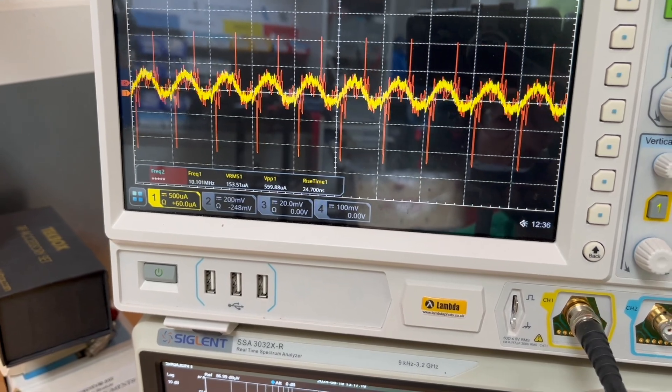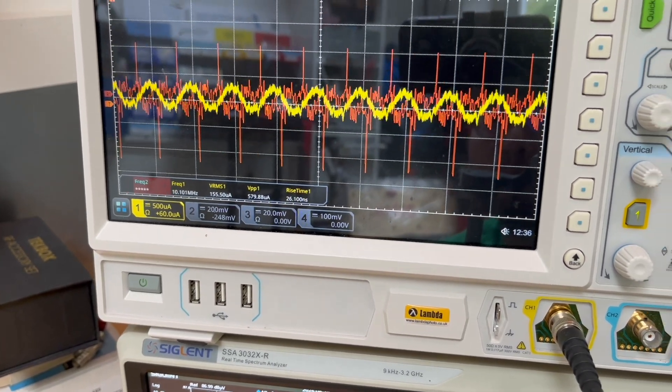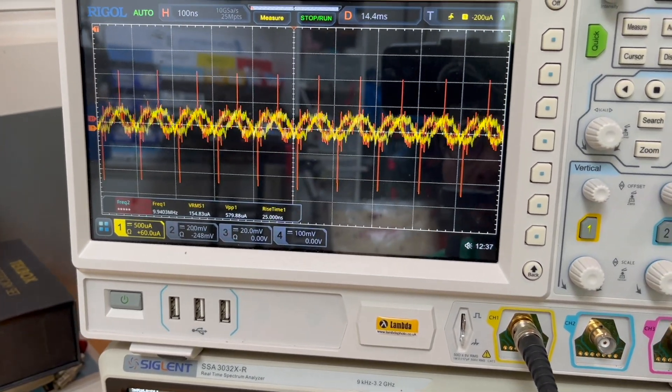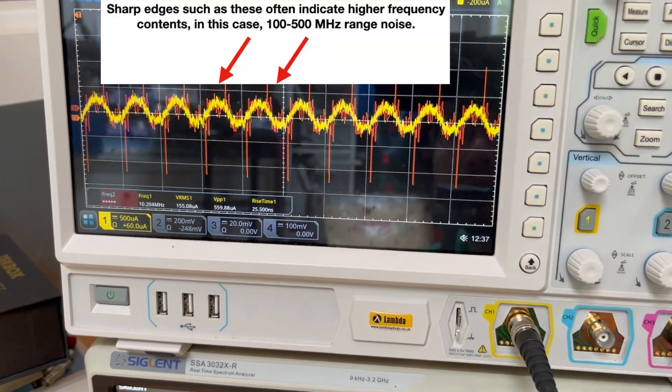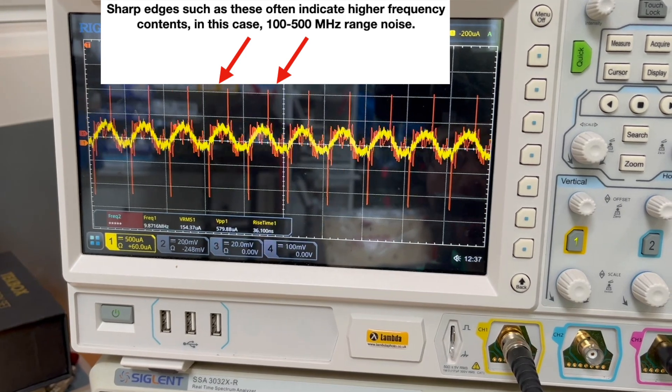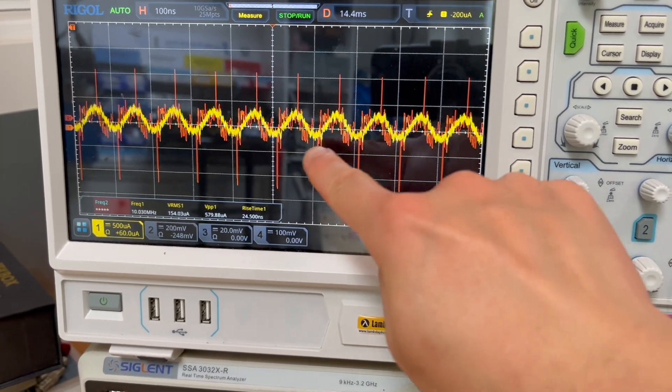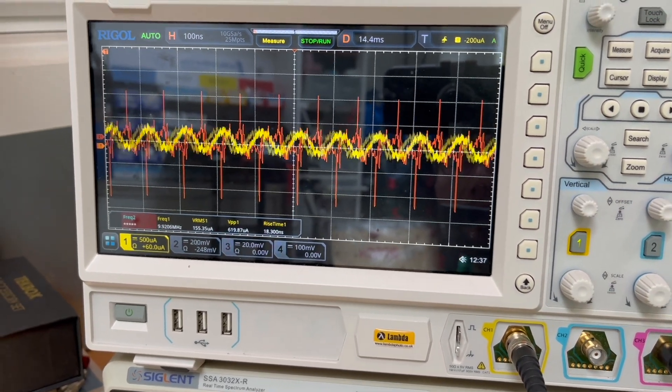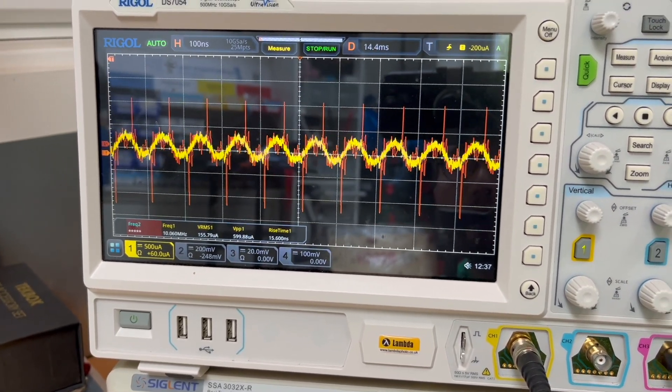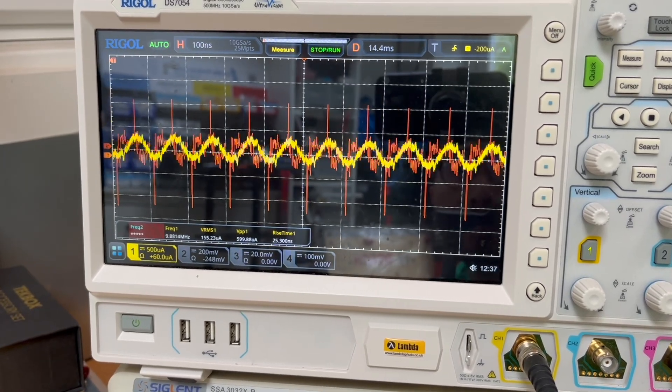So in terms of the peak-to-peak noise measurement amplitude, it's now reduced to about 560 microamps, whereas the previous case, I can't remember, but you can clearly see from this measurement is a lot higher. So yeah, again, all we left is really this 10 MHz fundamental frequency, which again can be further improved by using a better shielded cable.